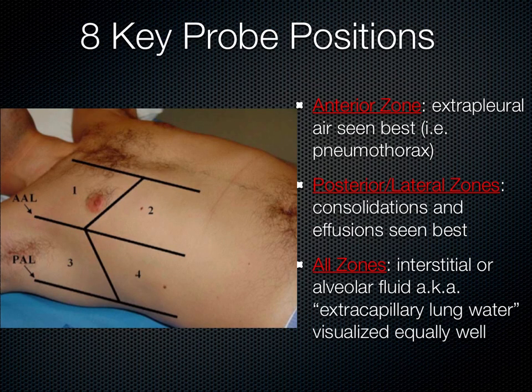There are really eight key positions, four on each side of the chest, that we want to scan when performing pulmonary ultrasound. The anterior zones, zones one and two, are best for viewing extrapleural air. For instance, when there's a pneumothorax and air is between the lung and the chest wall, it will collect anteriorly in a supine patient. Posterior and lateral zones are the dependent zones where we can best see consolidations and effusions. In all zones, we should equally be able to see extracapillary lung water, such as in pulmonary edema, both cardiogenic and non-cardiogenic.